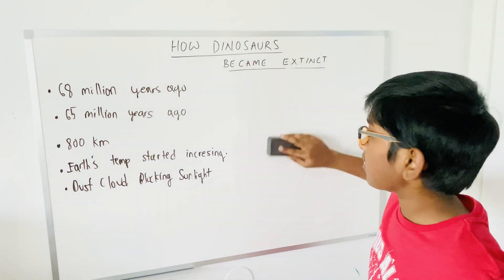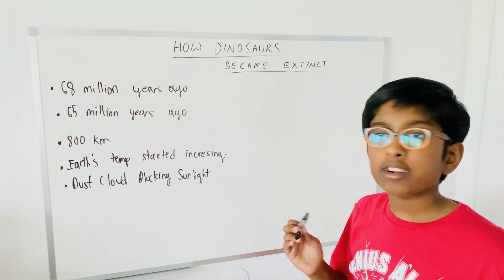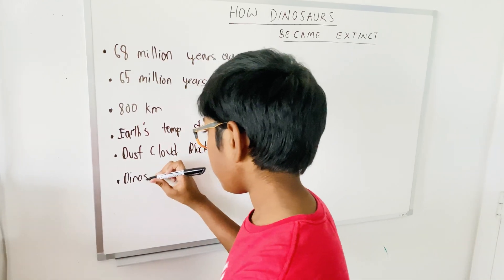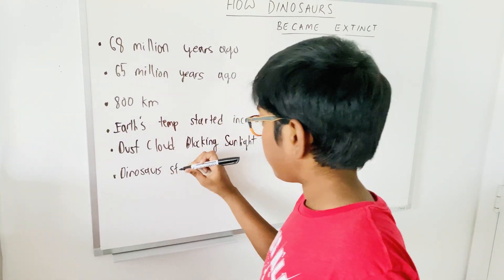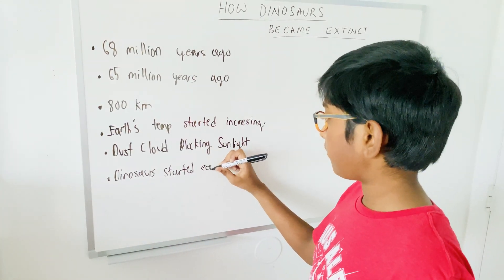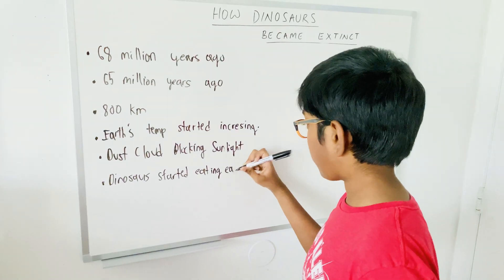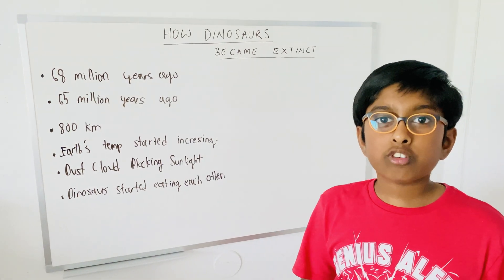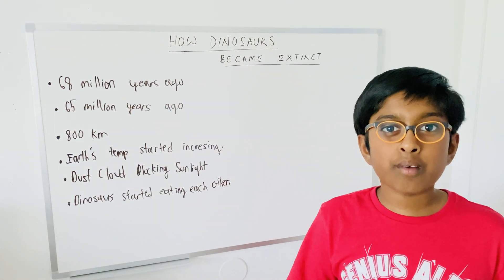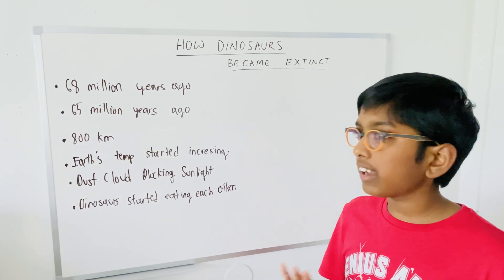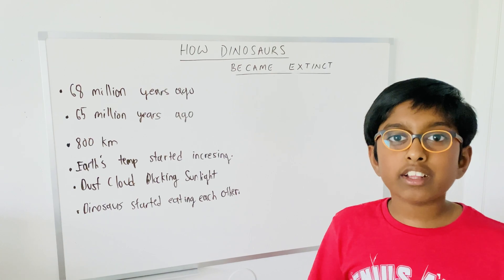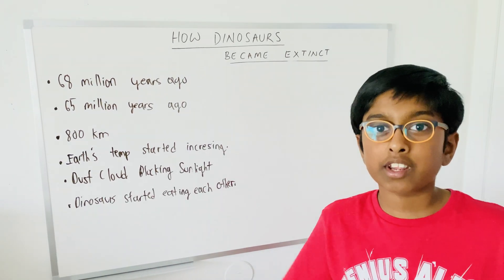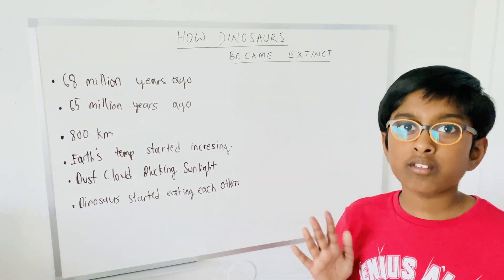This is what the dinosaurs did to keep themselves living — the dinosaurs started eating each other. Like a Triceratops versus a T-Rex. The herbivores had already died, so that's when the carnivores started eating each other, and the herbivores started eating each other, because there were no plants remaining and no sunlight.